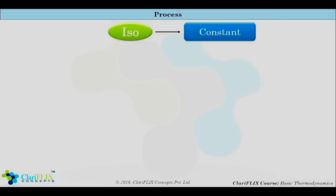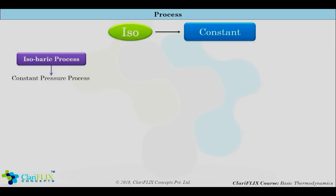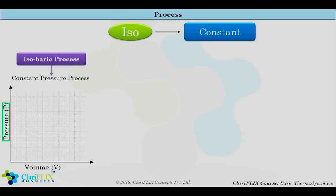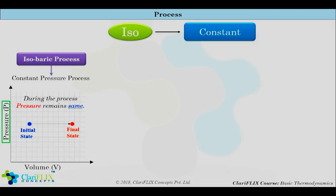In general, iso means constant. The prefix iso is usually designated for a process for which a certain property remains constant. The first is the isobaric process — isobaric process is a constant pressure process. On the PV diagram, the initial state is marked by a blue dot and the final state by a red dot, with pressure remaining the same throughout. All heat exchangers work on a constant pressure process.